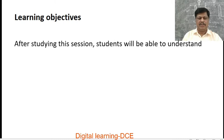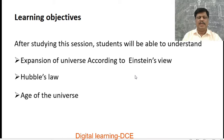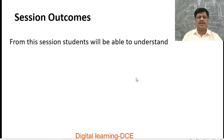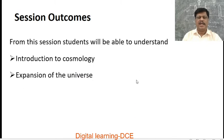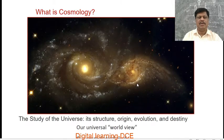The learning objectives are: after studying this session, students will be able to understand the expansion of the universe according to Einstein's view, Hubble's law, and the age of the universe. The session outcomes are: students will be able to understand the introduction to cosmology, expansion of the universe, statement of Hubble's law, and the age of the universe.